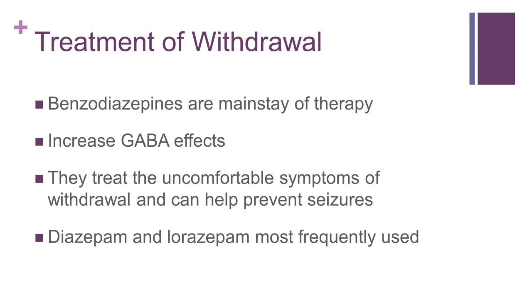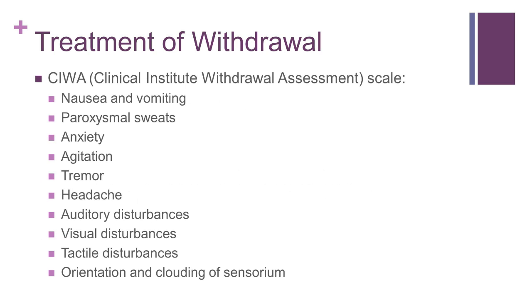The pharmacologic mainstay of therapy for alcohol withdrawal is treatment with benzodiazepines. These medications work by enhancing inhibitory GABA effects, thereby lessening the CNS excitation that occurs in withdrawal. Benzodiazepines help reduce the uncomfortable symptoms of withdrawal, such as tremor and agitation. They can also help prevent the development of withdrawal seizures. Diazepam and lorazepam are frequently used. In significant withdrawal, they are used in IV form, but PO may be used in more mild cases. Benzodiazepine dosing is often determined using a standardized symptom scale called the CIWA scale.